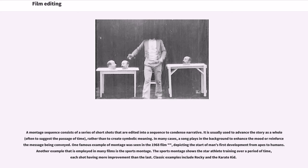A montage sequence consists of a series of short shots that are edited into a sequence to condense narrative. It is usually used to advance the story as a whole, often to suggest the passage of time, rather than to create symbolic meaning. In many cases, a song plays in the background to enhance the mood or reinforce the message being conveyed. One famous example of montage was seen in the 1968 film depicting the start of man's first development from apes to humans. Another example employed in many films is the sports montage, which shows the star athlete training over a period of time, each shot having more improvement than the last. Classic examples include Rocky and The Karate Kid.